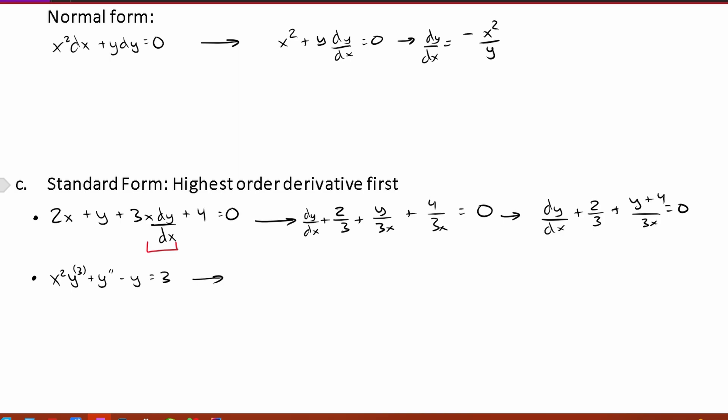For this next one remember if we have an exponent in parentheses that means we have a differential part. So this is really x squared times d cubed y over dx cubed. That's the differential equation equivalent. So this needs to be in front by itself. And then we also have this y double prime. So that needs to be next by itself. We want the front one to be completely naked. So divide everything by x squared. We're going to have y triple prime plus y double prime over x squared minus y over x squared is equal to 3 over x squared.